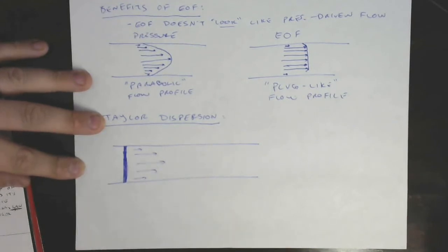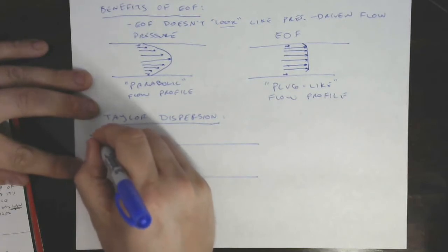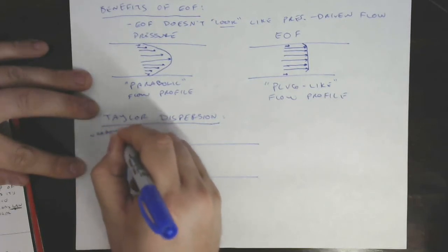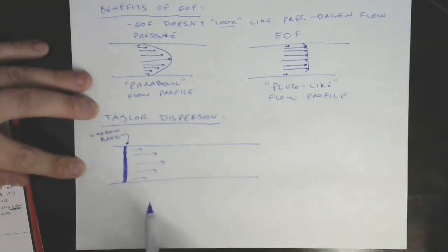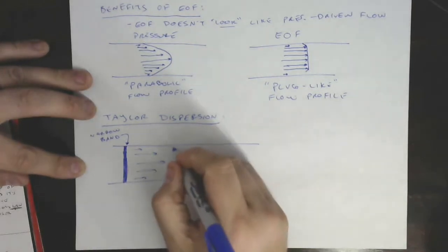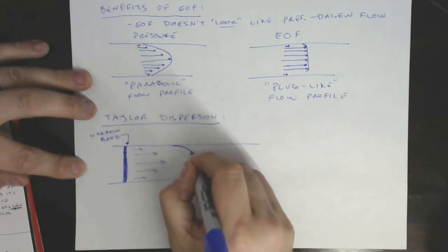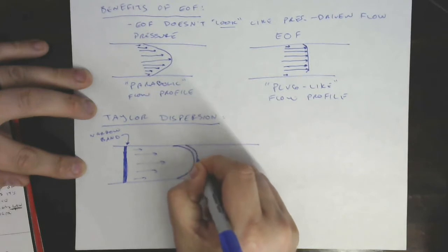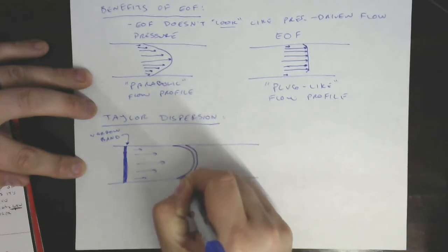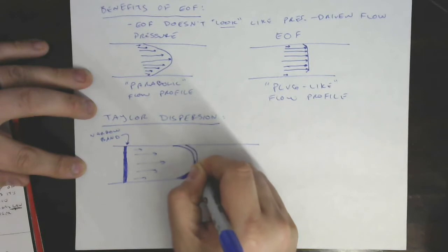So we know that the velocity profile it's going to experience is going to look something like that, right? Some parabolic flow profile. So let's make sure we label this starting point as a narrow band right there. Okay, and what's going to happen if you take a narrow band like this, you subject it to a velocity profile like this? Well, it's going to deform. It's going to look something like the velocity profile, or at least in theory it will, but in reality this is not exactly what we get.